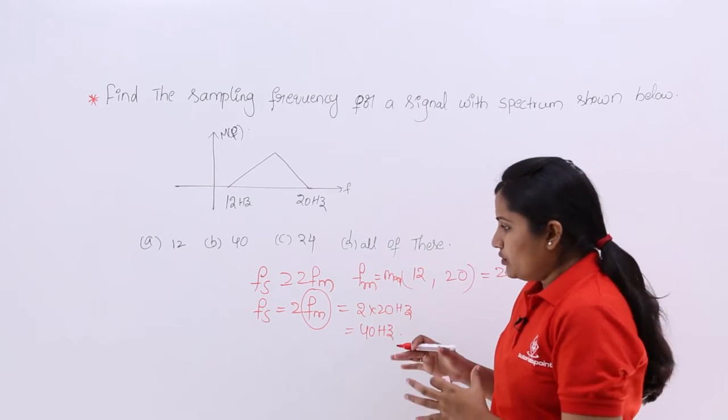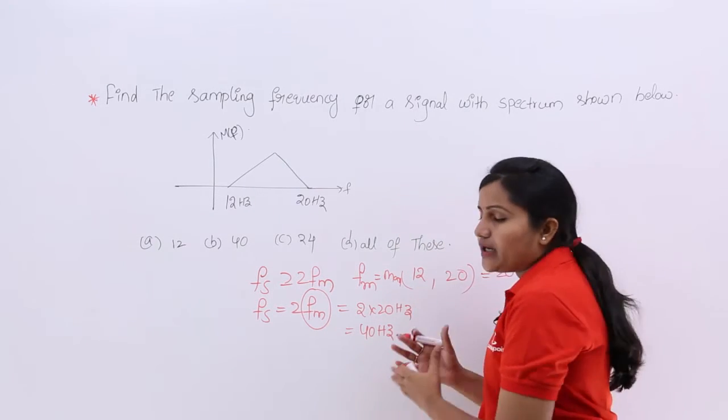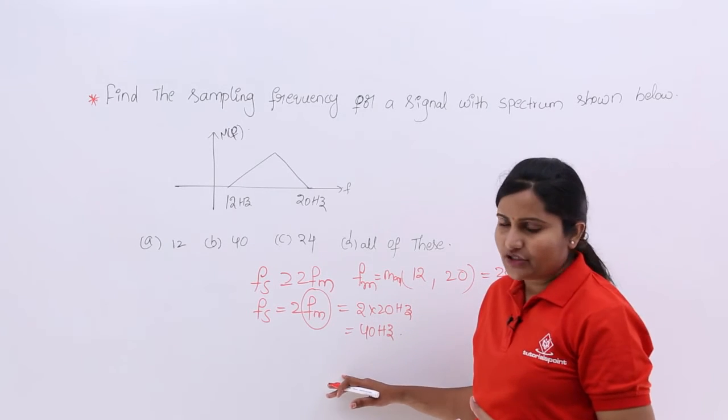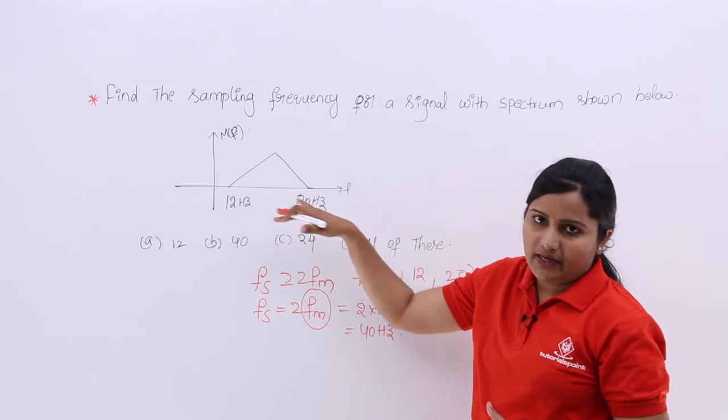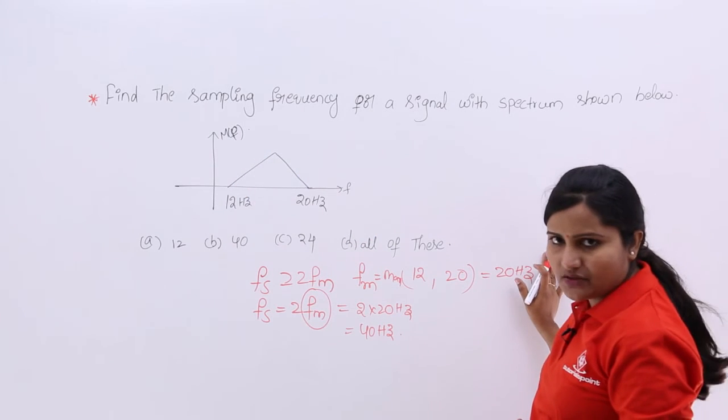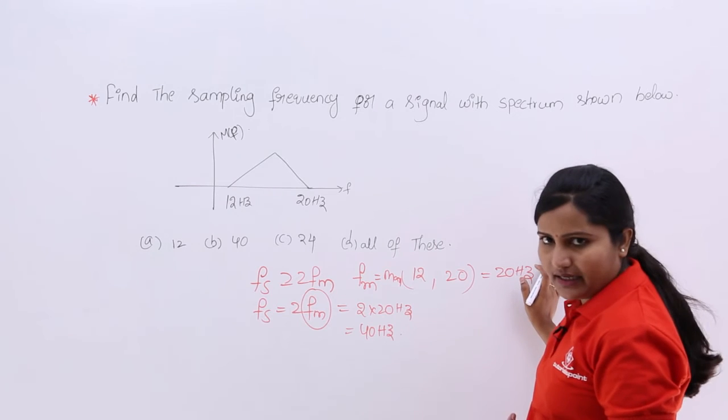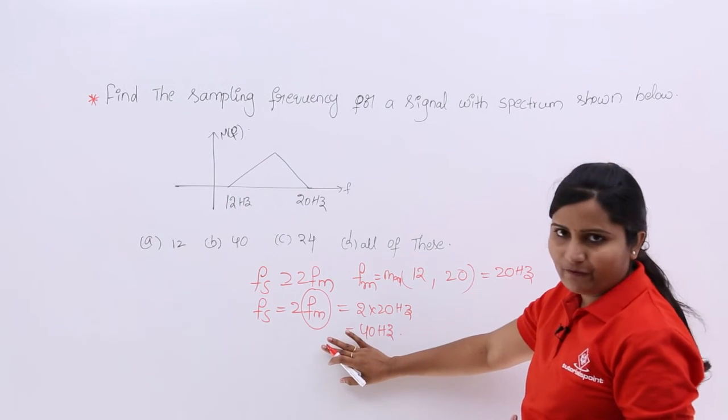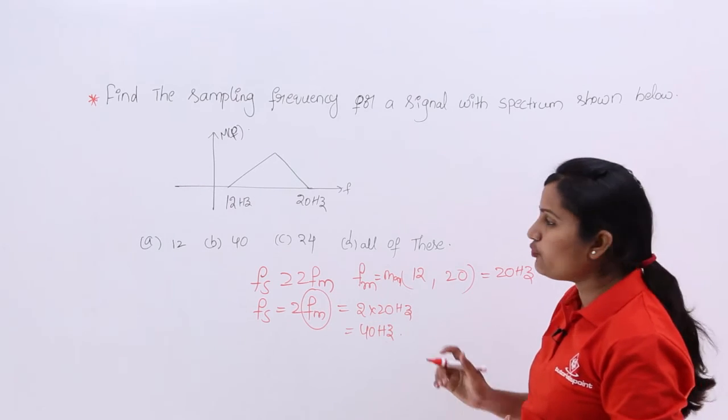To overcome those effects you need to consider at least 40 hertz for the signal with spectrum like this. From this spectrum I extracted my message frequency, by taking the reference of this message frequency I found my fs, that means fs is equivalent to 40 hertz.